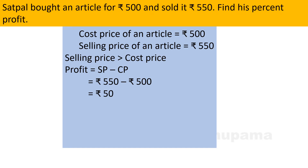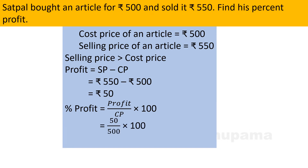Now we need to find out percent profit. The formula is profit divided by cost price, multiplied by 100. Profit is rupees 50 and cost price is rupees 500. So we put the values: 50 divided by 500, multiplied by 100. Solving this, the zeros cancel and we get 10 percent. So the percent profit is 10 percent.